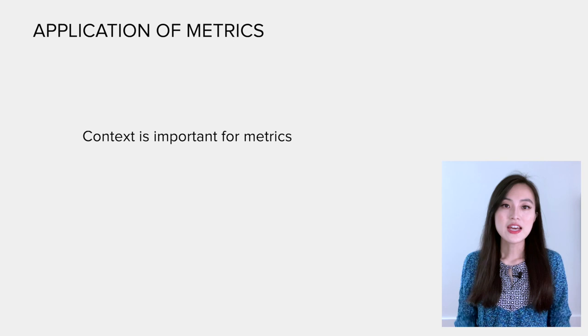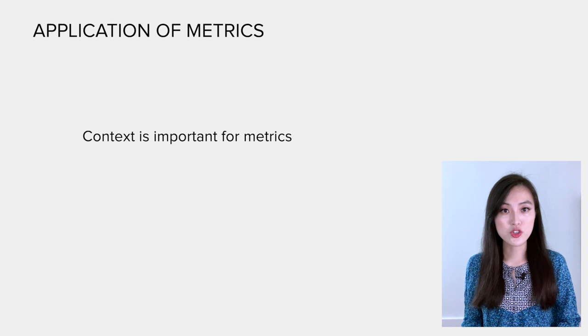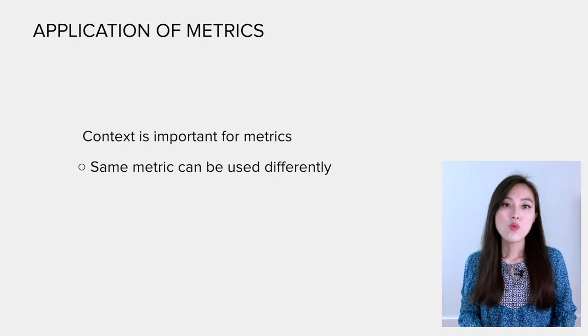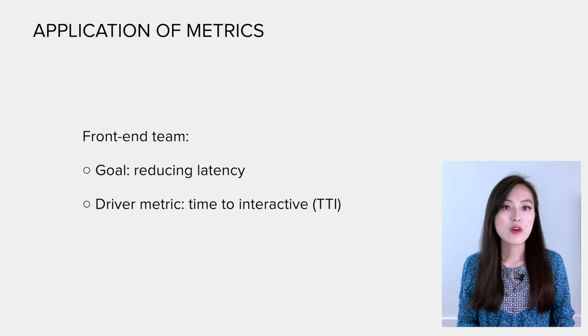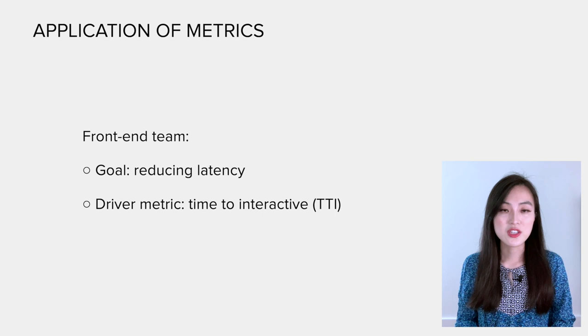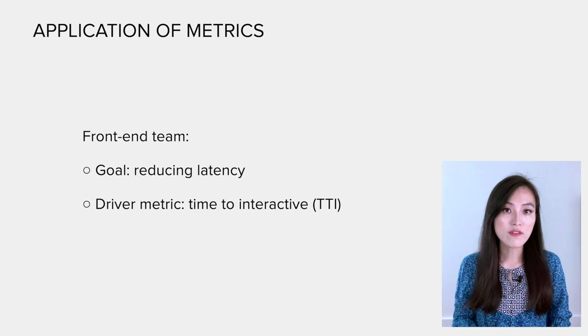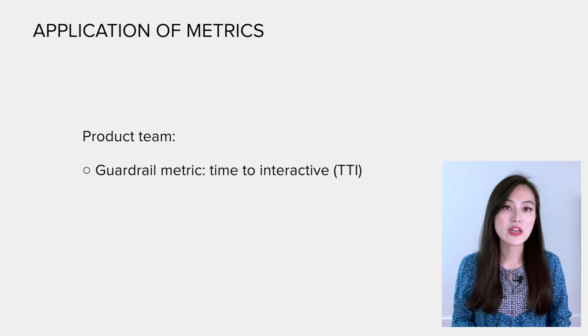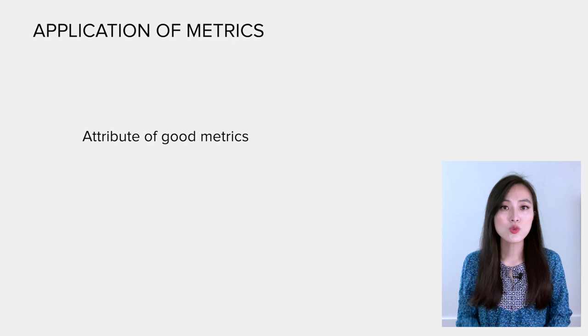Now you know the definition of goal metrics, driver metrics, as well as guardrail metrics. In practice, we need to be clear about the context when talking about a specific metric, because the same metric can be used differently for different teams. One team's driver metric can be other team's guardrail metric. For example, when front-end team's goal is to improve web performance, so reducing latency is their goal and time to interactive (TTI) can be one of their driver metrics. A product team may use the same metric as a guardrail metric to make sure any product changes don't increase latency.